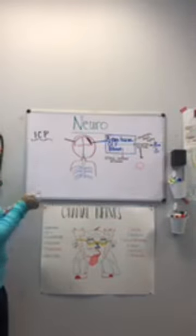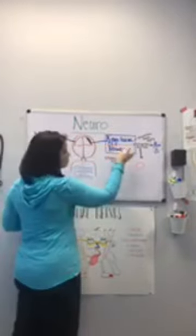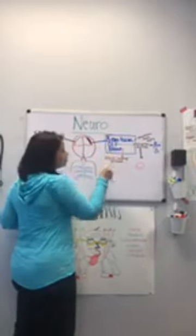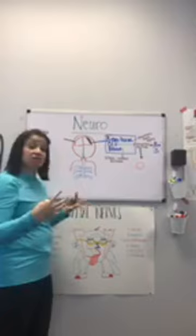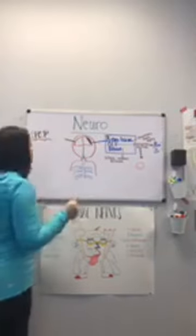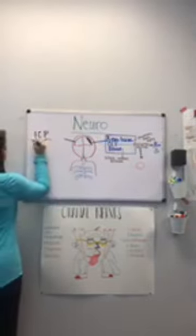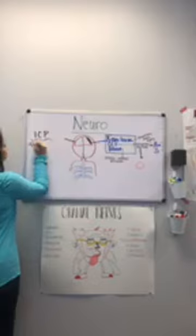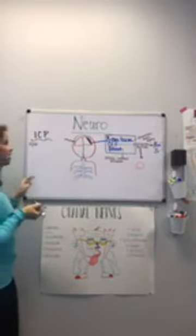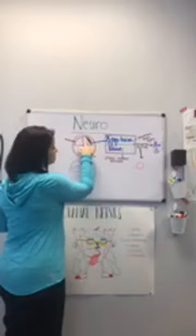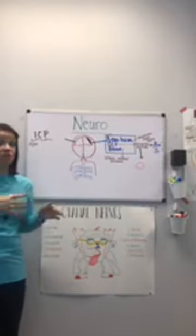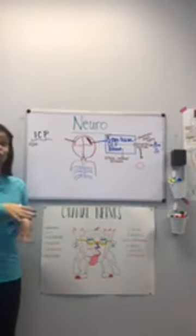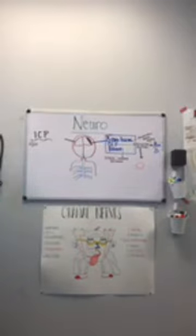It doesn't matter which of the three components increases — it's going to increase the pressure inside the cranium. When you have increased pressure inside the head, they get a pretty massive headache. Anytime you increase pressure on an organ, it hurts. There's also increased pressure and the body is trying to find a way to get rid of extra fluid to normalize the pressure, so these patients get severe nausea and vomiting. The body is rapidly trying to get rid of fluid to decrease the pressure.